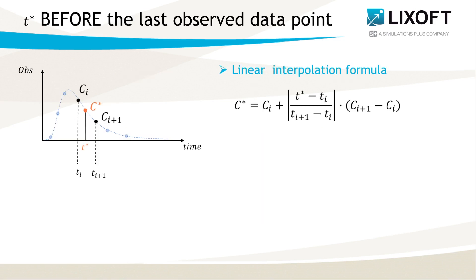So, if the new point is added before the last observed data point, but after the first dose, then the interpolation formula uses adjacent concentration values. So, here it uses Ci, which is a concentration at time before t-star, and Ci plus 1, which corresponds to a concentration after the time t-star. The linear interpolation formula is a linear combination of concentration values at these two points.